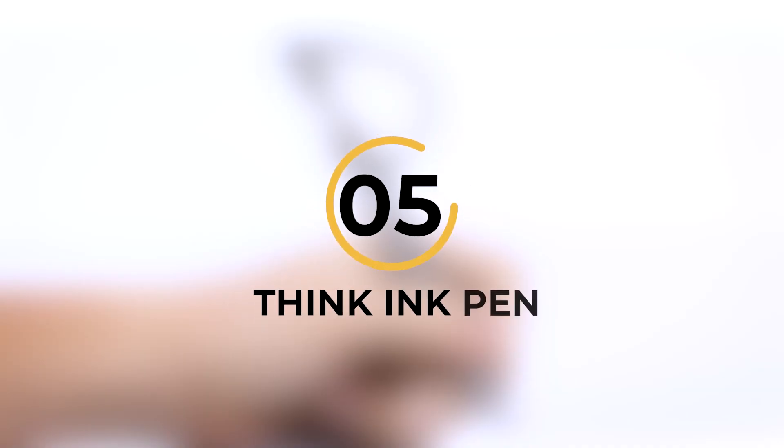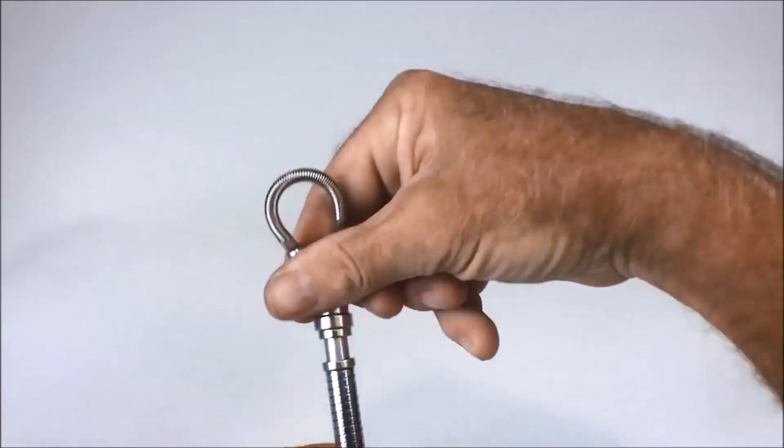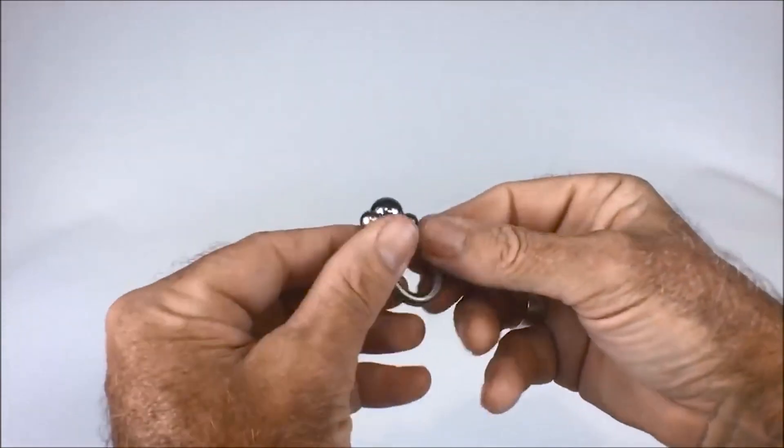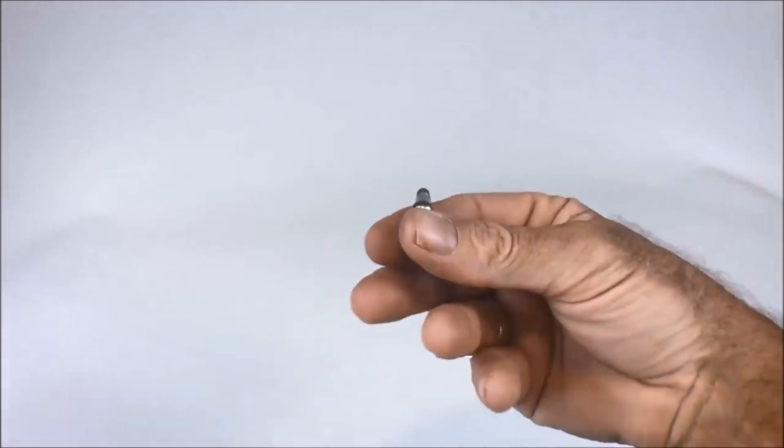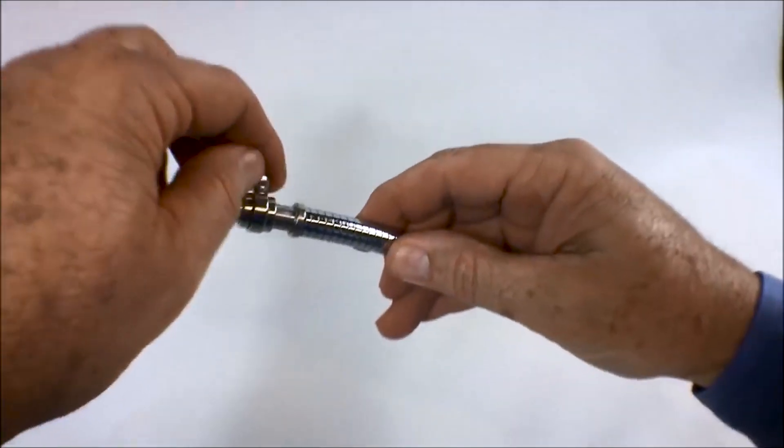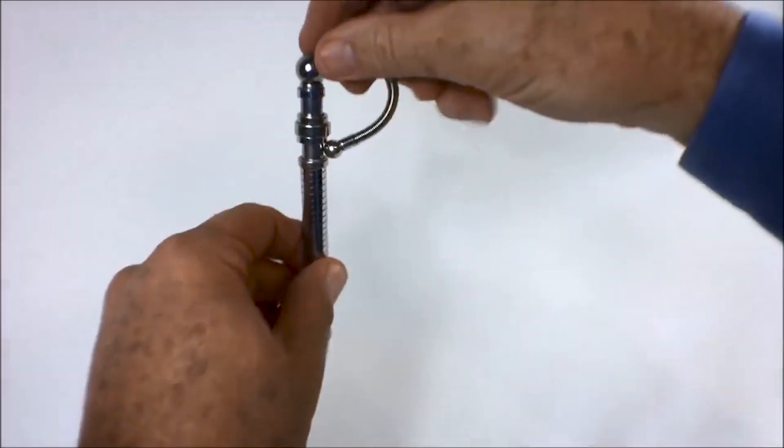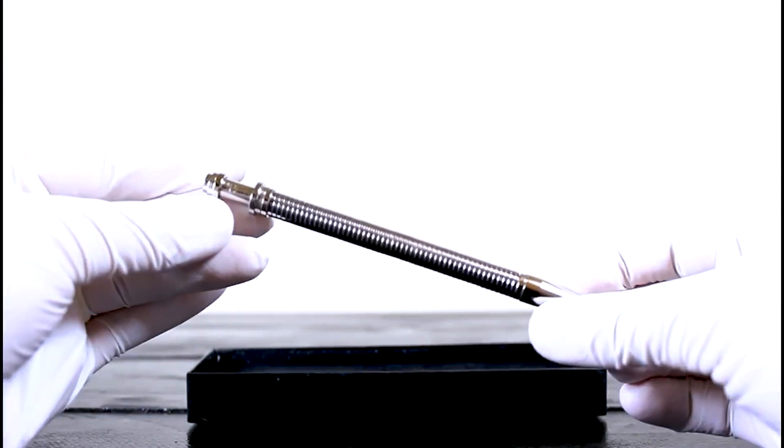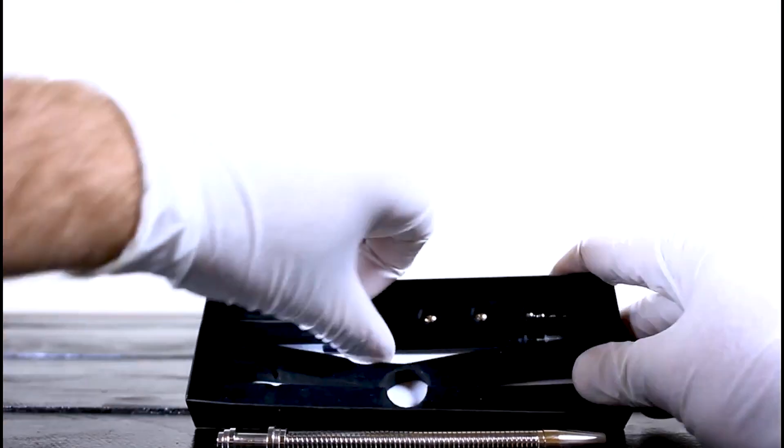Number 5. Think Ink Pen. With its sleek design, strong construction, and engaging fidgeting feature, the Think Ink Pen is not just a pen but a therapeutic gadget that keeps your hands busy and your mind focused. This innovative creation is made with strong aluminum, ensuring durability and a sleek design.